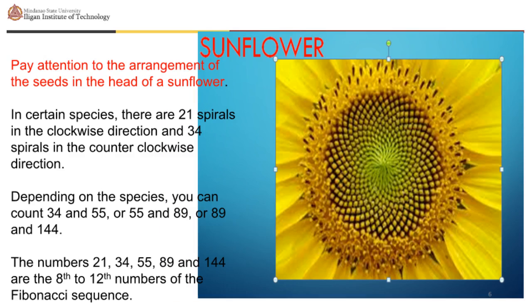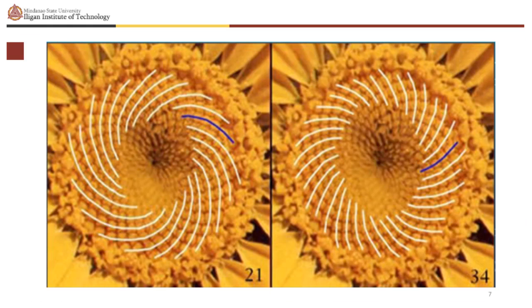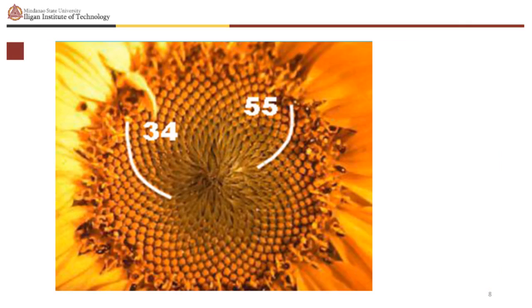Pay attention to the arrangement of the seeds in the head of a sunflower. The numbers 21, 34, 55, 89, and 144 are the 8th to 12th numbers of the Fibonacci sequence. In certain species there are 21 spirals in the clockwise direction and 34 spirals in the counterclockwise direction. Depending on the species, you can count 34 and 55, or 55 and 89, or 89 and 144.